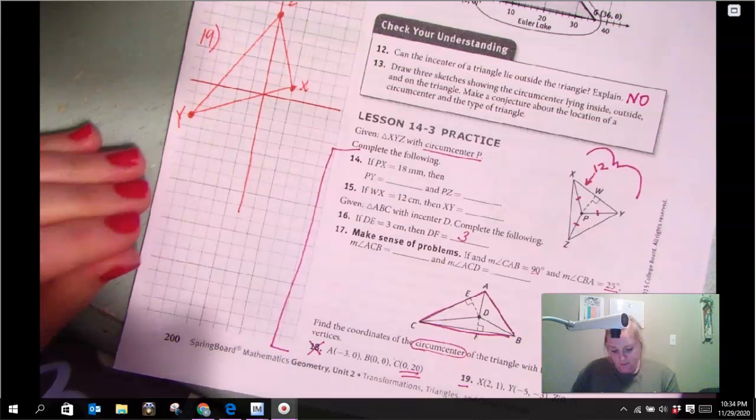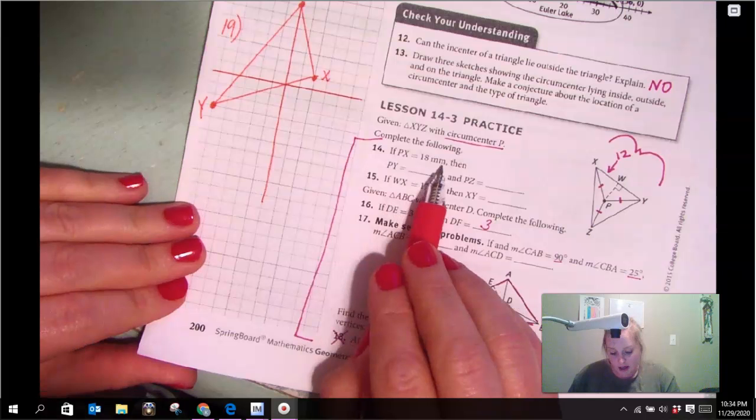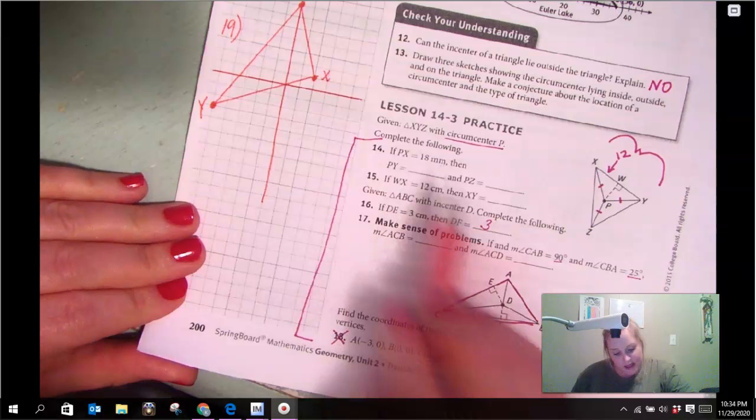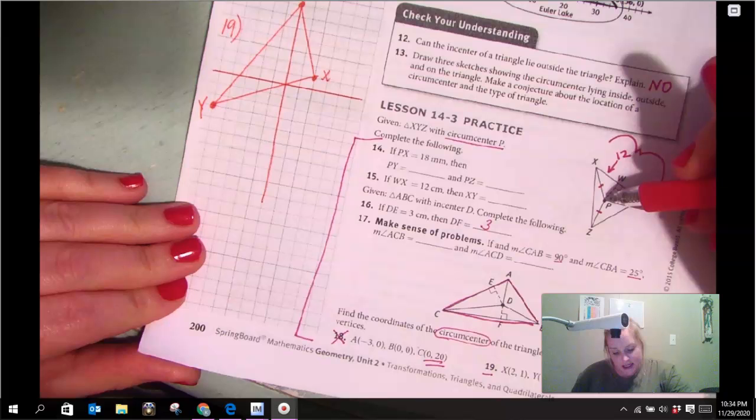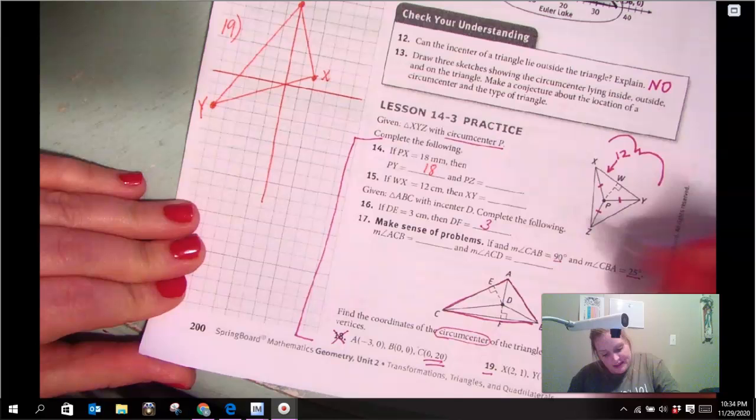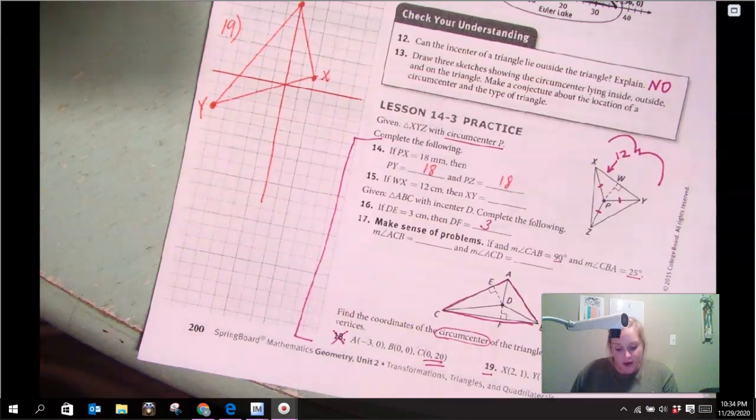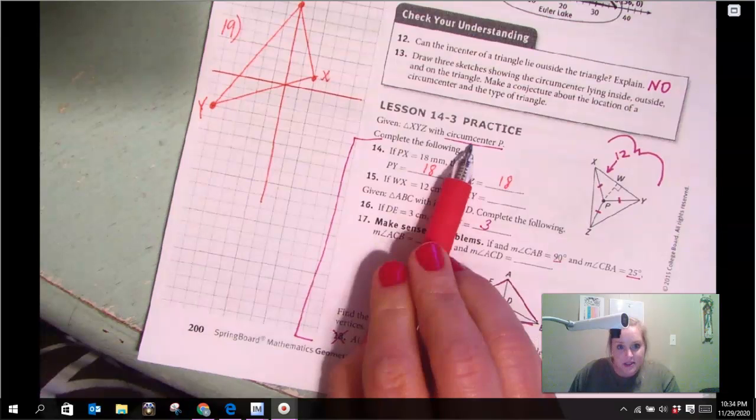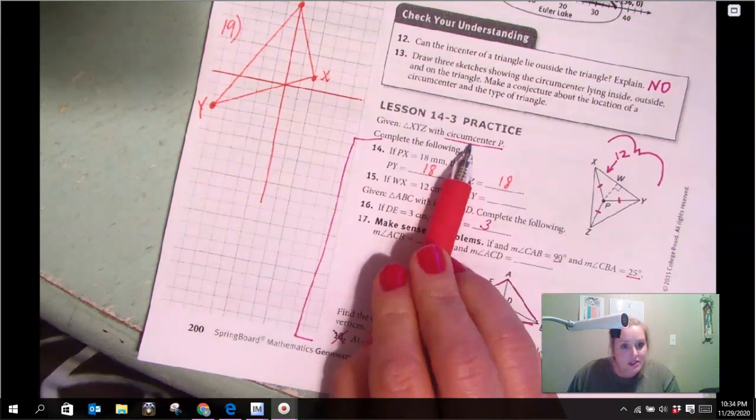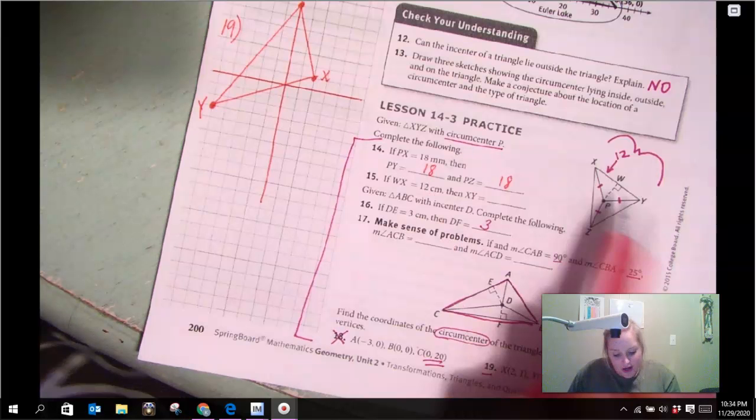Okay, so it says if PX equals 18 MM, so PX is 18, then PY is 18, and PZ is 18. They are all going to be the same because remember, a circumcenter is equal distance from each vertex.